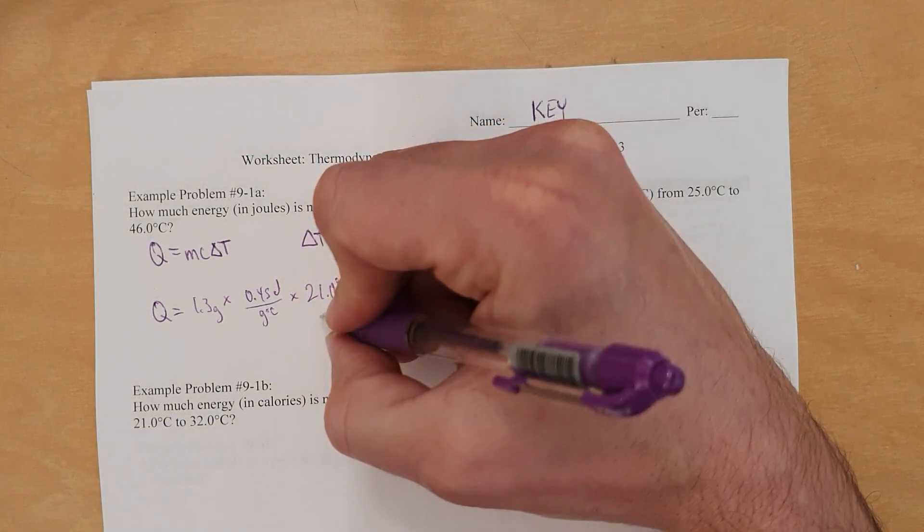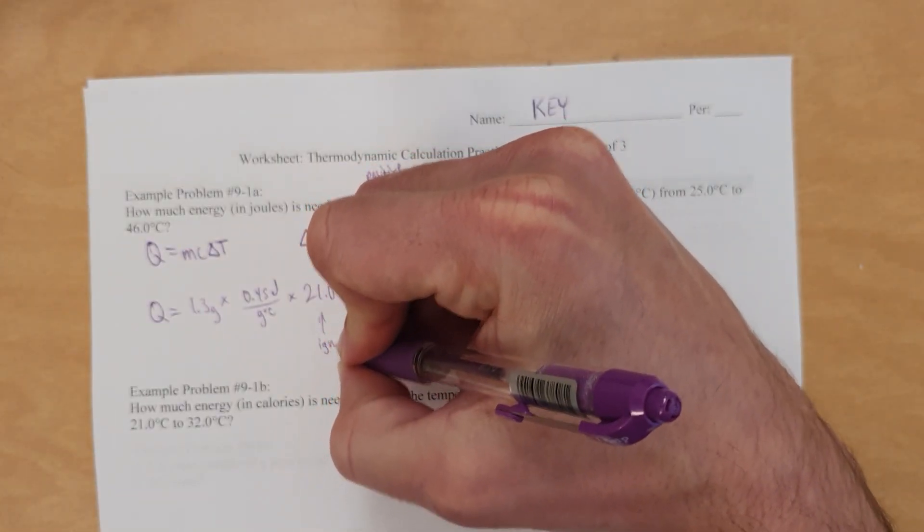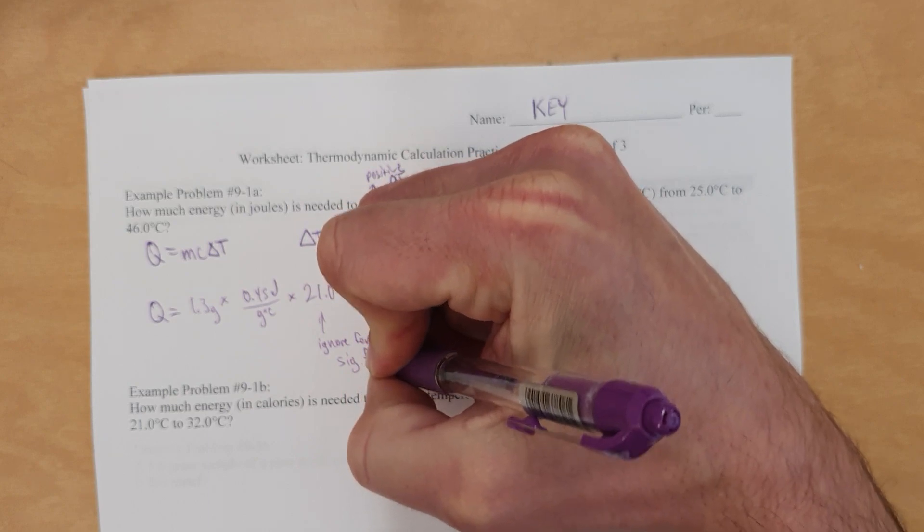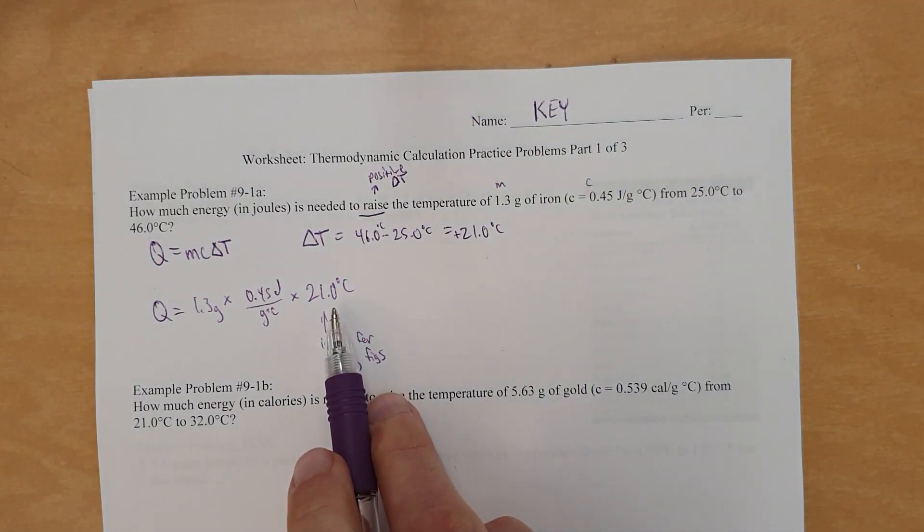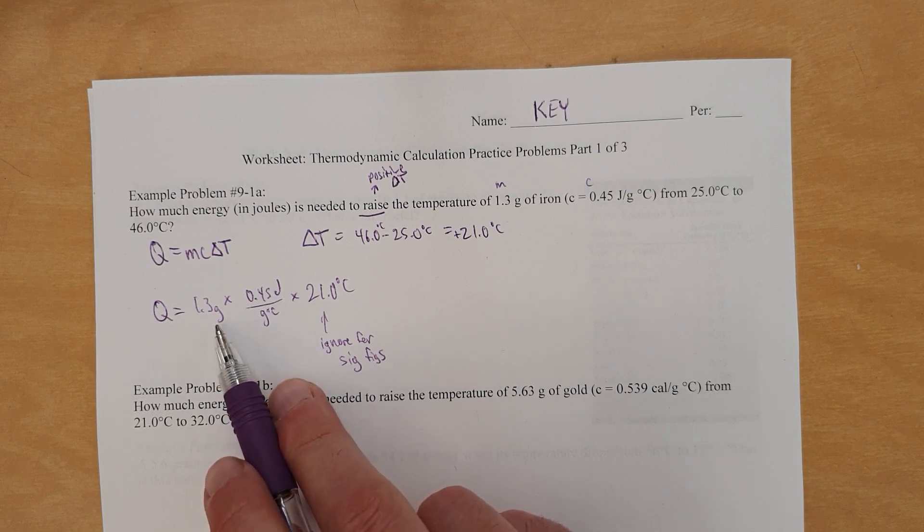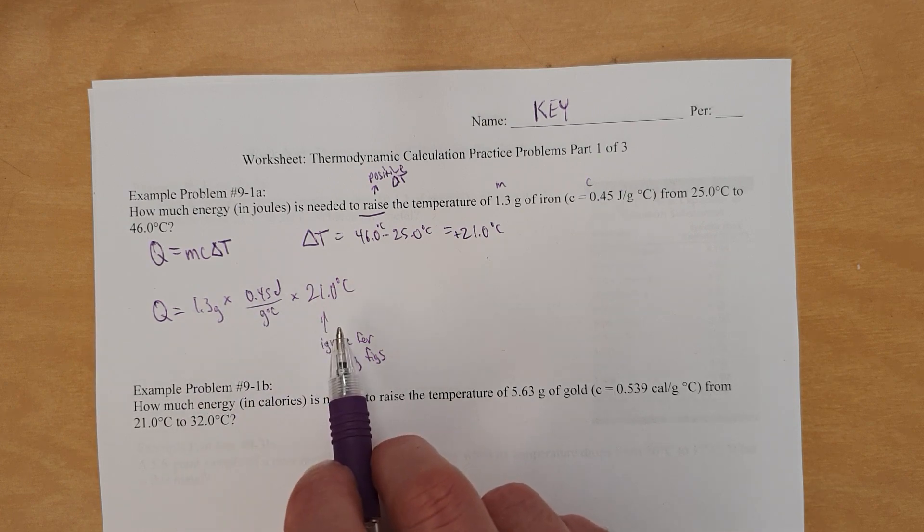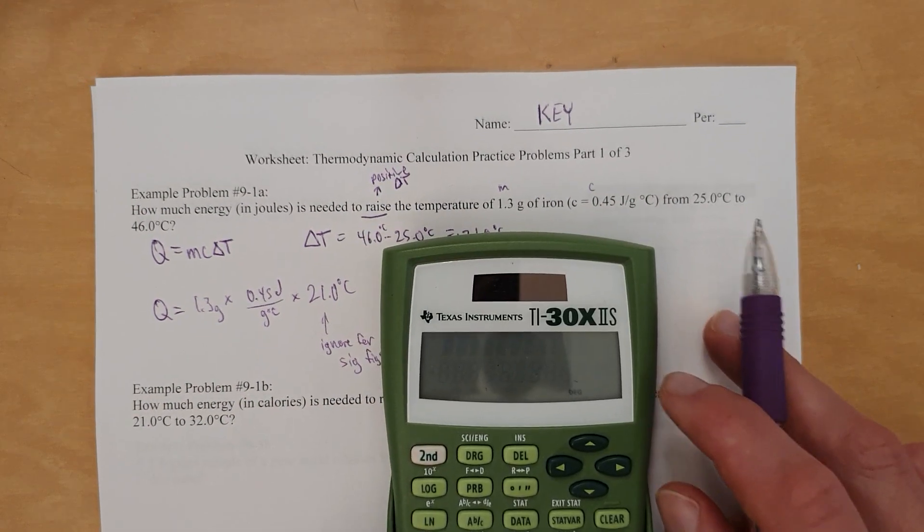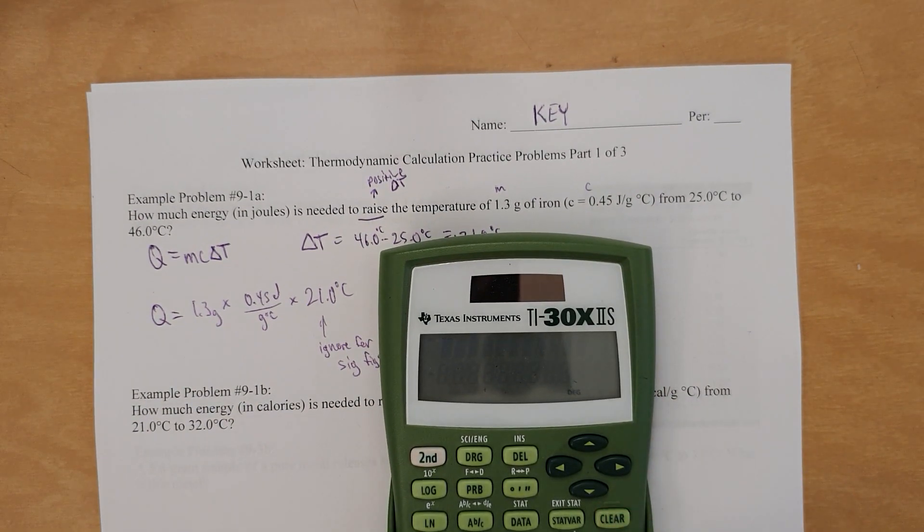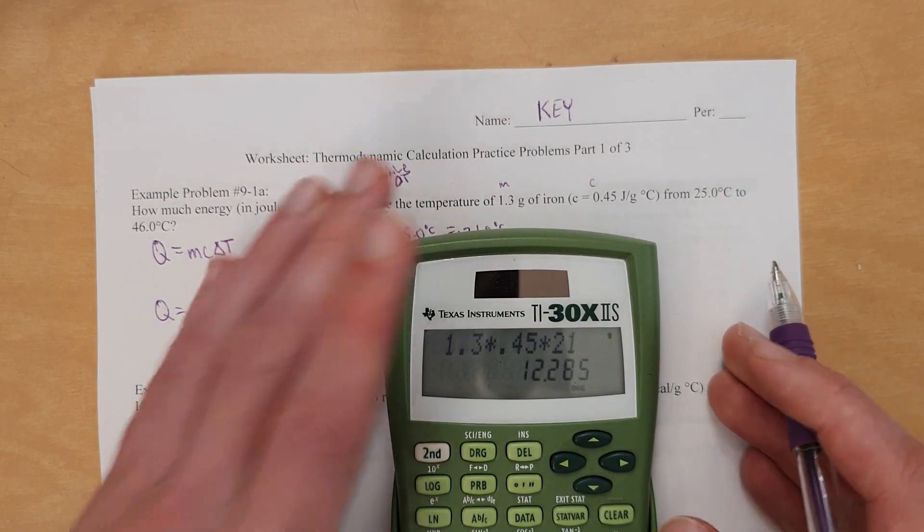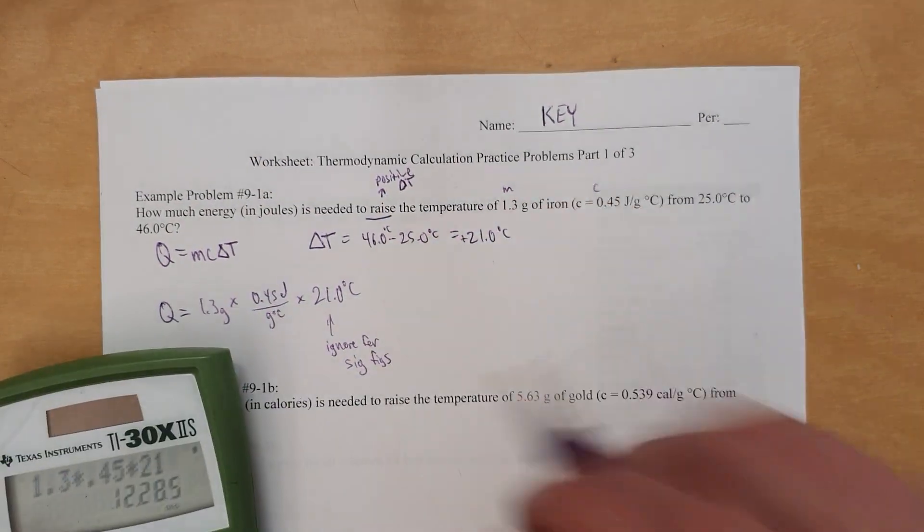Remember, for sig figs, ignore sig figs when it comes to temperature. So just pay attention to non-temperature stuff for specific heat capacity and mass or energy or whatever when it comes to the temperature stuff. So this times this times this. So we grab a calculator and try that out, and we get 1.3 times 0.45 times 21. And that gives an answer of 12.285.